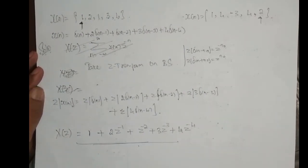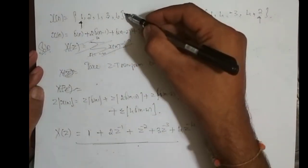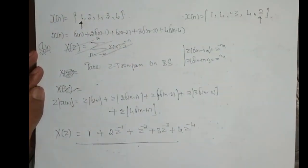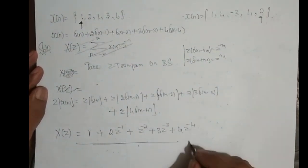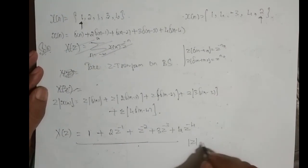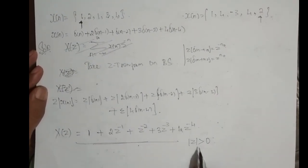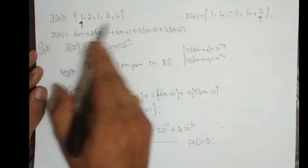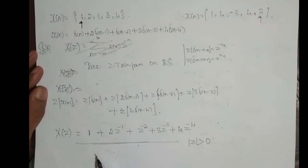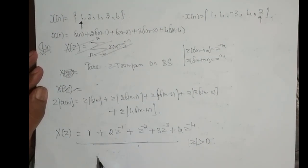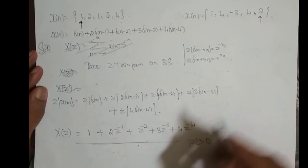So this is the Z-transform of the sequence. And what is the ROC? The magnitude of Z is greater than 0. I wrote this because it is a finite length right-sided sequence.